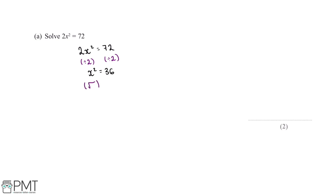The final thing we'll want to do is square root both sides of this equation. On the left side we'll just be left with an x, since the square root of x squared gives us x. The square root of 36 will give us plus or minus 6. This plus or minus is easy to forget, however it's important for this question.